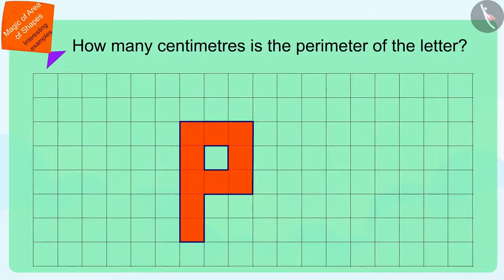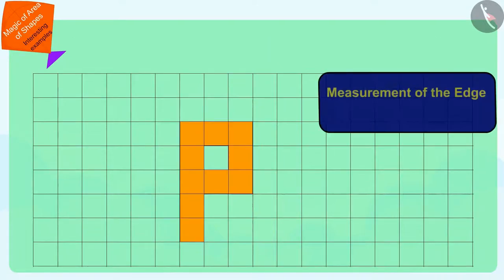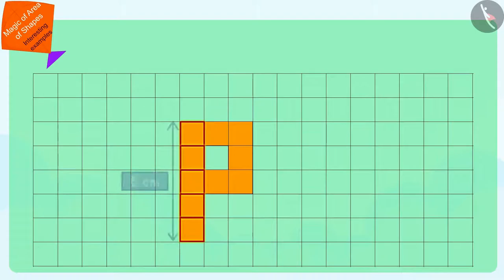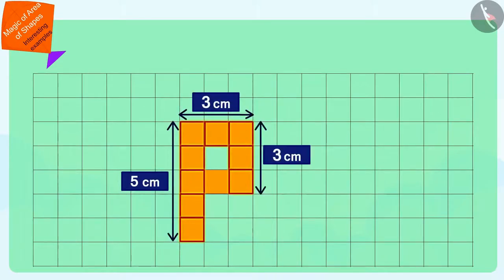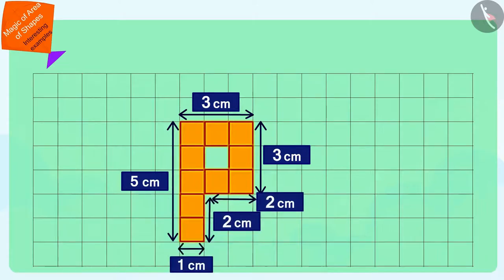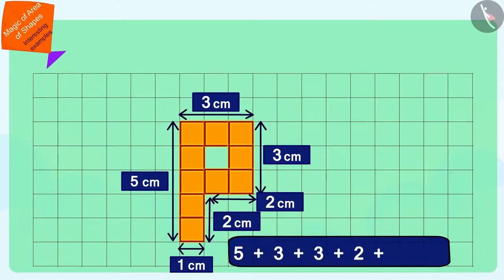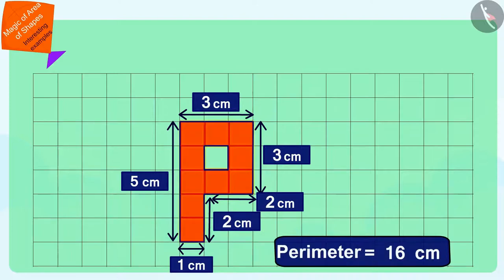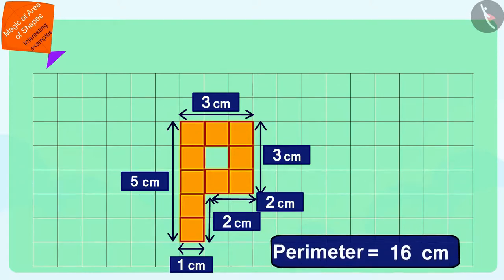We can find it very easily. The measurement of the edge of a square is 1 cm. So, to find the perimeter of this letter, we only need to find the number of squares that fall in its edges and add the measurements of all those edges. In this way, the perimeter of Pinky's letter P is 16 cm.